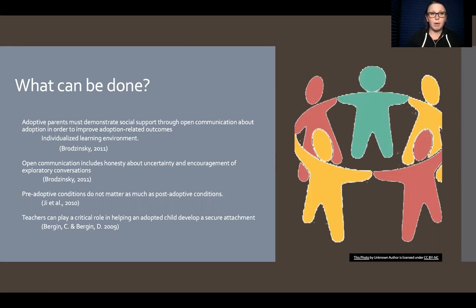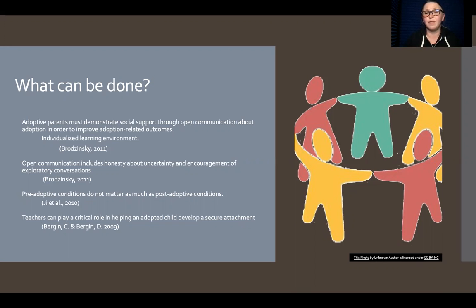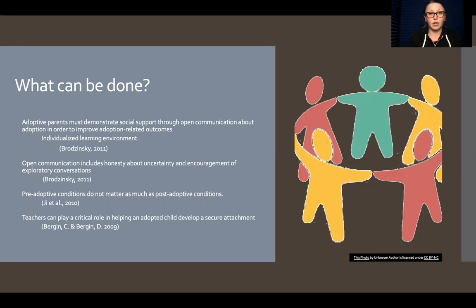Adoptive parents can be a critical part of this discussion because they demonstrate social support and can communicate openly about adoption to improve adoption-related outcomes. This can be seen in the classroom by individualizing learning environments based on the adoptive parents' communication with the teacher. Open communication can include honesty about uncertainty and encouragement of exploratory conversations. Brodinsky in 2011 found that open communication is a really important part of developing healthy connections. Importantly, the pre-adoption conditions did not matter as much as the post-adoptive conditions — it's the communication after adoption that matters most.